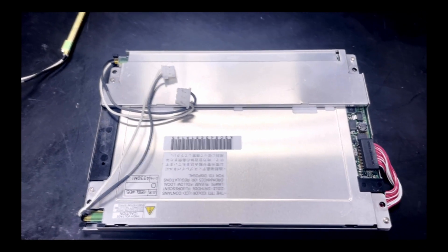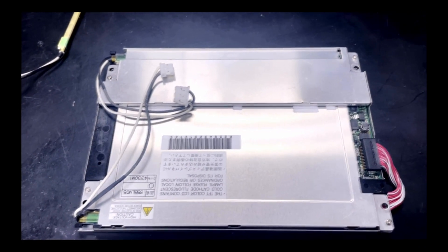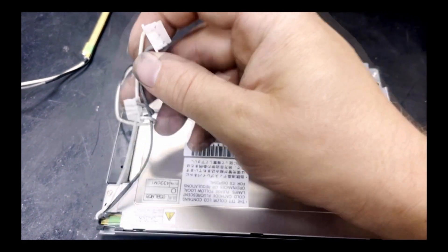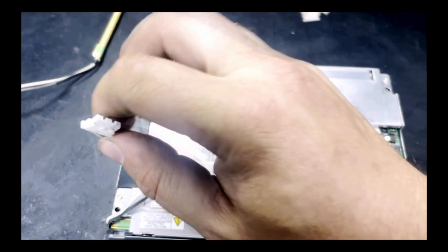Most LCDs have what's called an inverter. This inverter is going to take DC power and convert it to AC power to provide power to light the CFLs.